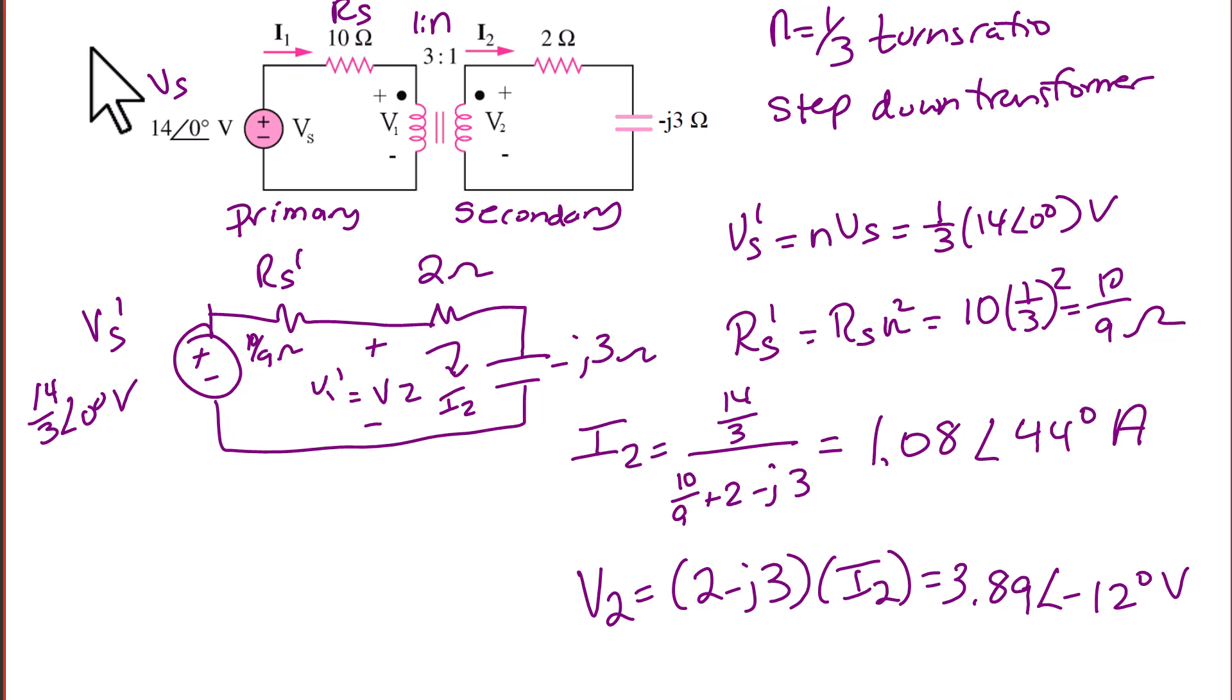Now we need to find I1 and V1. V1 is equal to 1 over N times V2, so that's going to be 3 times 3.89 with an angle of negative 12 degrees, which is 11.68 with an angle of negative 12.35 degrees. I1 is equal to N times I2, which equals 1 third times 1.08 with an angle of 44 degrees, or 0.36 with an angle of 44 degrees in amps.